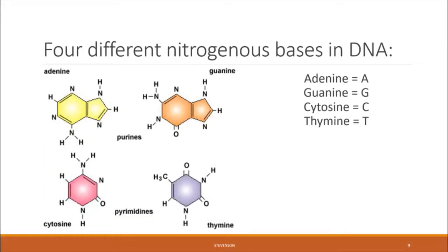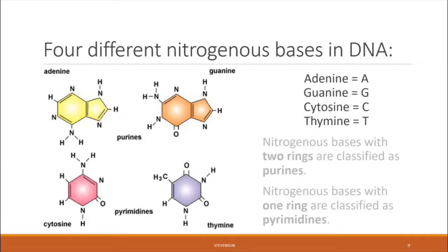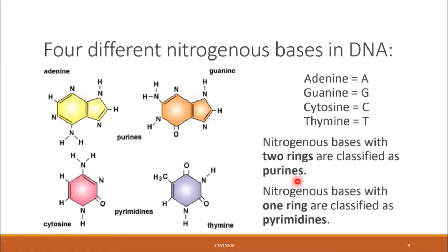Now let's get down to the details of the structure and function of DNA. As review, there are four different nitrogenous bases within the nucleotides that compose DNA: adenine, guanine, cytosine, and thymine, indicated with the variables A, G, C, and T. Within these four bases there are actually two different groups — nitrogenous bases with only one ring are classified as pyrimidines, whereas the ones with two rings are classified as purines. Adenine and guanine are purines, while cytosine and thymine are pyrimidines.